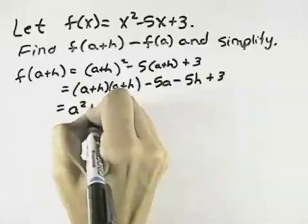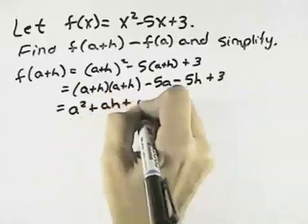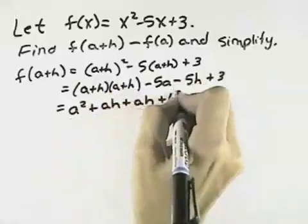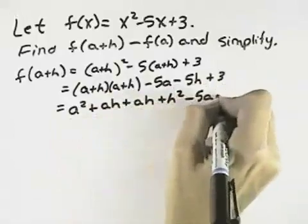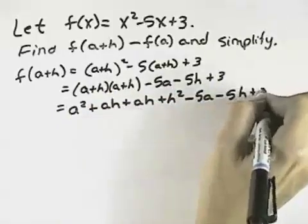a squared plus ah plus ah plus h squared minus 5a minus 5h plus 3.